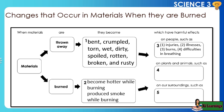When materials are thrown away, they become bent, crumpled, torn, wet, dirty, spoiled, rotten, broken, and rusty. When burned, they become hotter while burning and produce smoke while burning. These changes have harmful effects on humans such as: 1) injuries, 2) illnesses, 3) burns, and 4) difficulties in breathing.